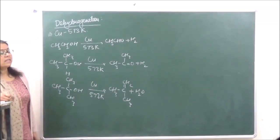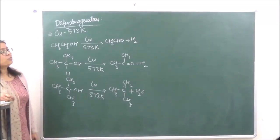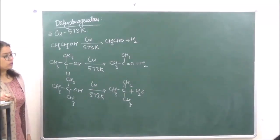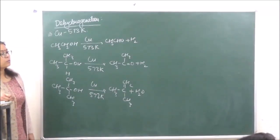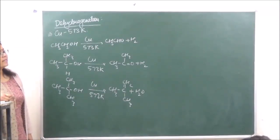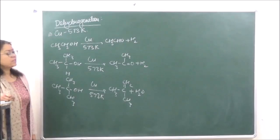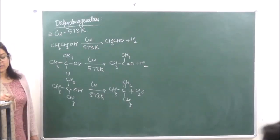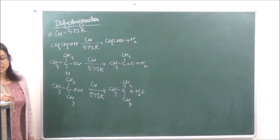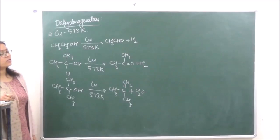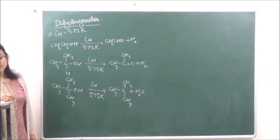The test for alkenes — de-colorization of bromine water. Bromine is brown in color, so as soon as it comes in contact with an alkene or alkyne, it is going to get de-colorized. That is a test for unsaturation, which is what we call it.